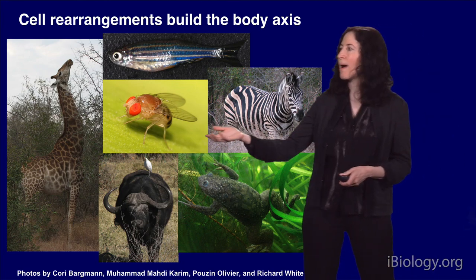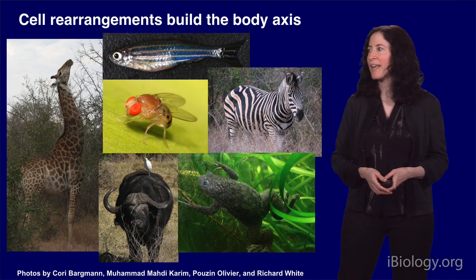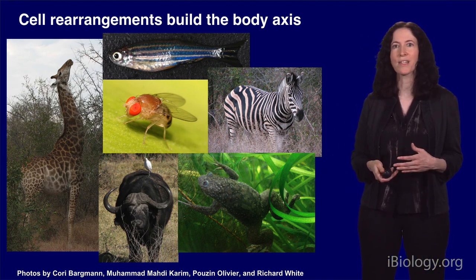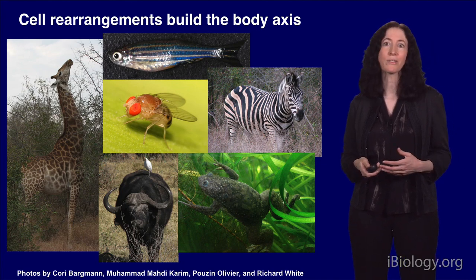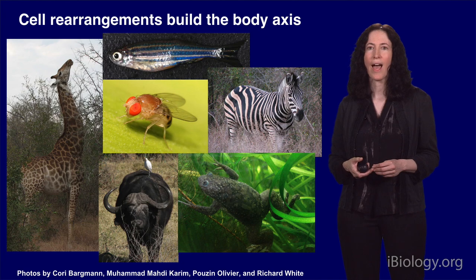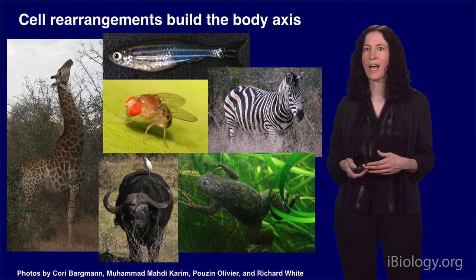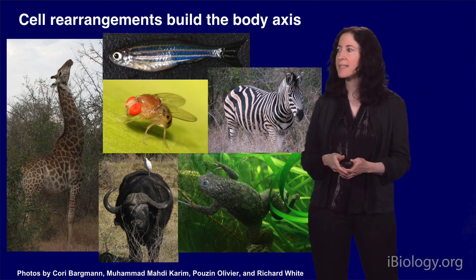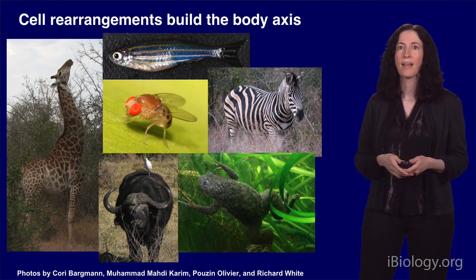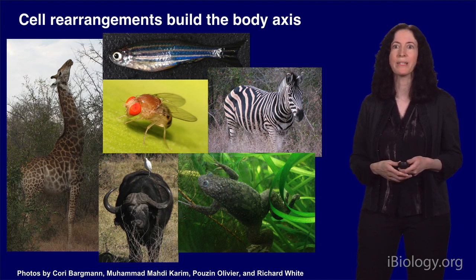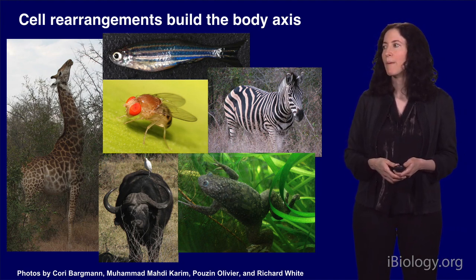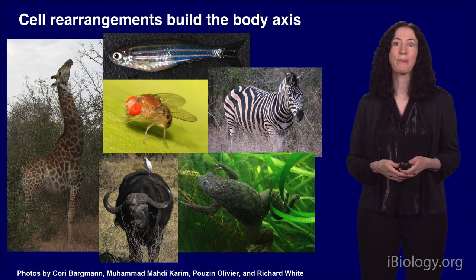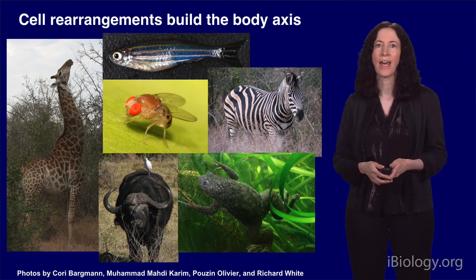In my lab, we study this problem in the fruit fly Drosophila, shown here on a banana. Drosophila is an excellent system for studying developmental biology. The flies are very easy to grow and work with in the lab. Importantly, the structural changes that build the head-to-tail body axis happen at the surface of the embryo, where we can directly visualize what the cells are doing by live imaging. It's important to understand this process not only because many different types of tissues have to elongate during development — such as the lung, the gut, and the spinal cord — but also because understanding how cells self-organize to form complex structures could help us fix structural defects that arise during human disease.